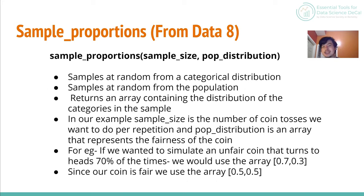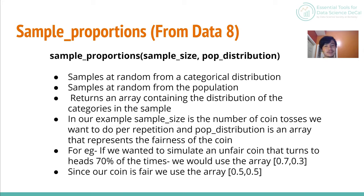One really important method you might have used in Data 8 in Jupyter Notebooks is sample_proportions, which performs many of those testing steps in one place. The first argument is the number of times you want to run the test; the second is the distribution of probabilities. For a fair coin flip, the distribution would be [0.5, 0.5]. For an unfair coin, you could do [0.7, 0.3] giving a skewed probability distribution. It does all the for-loop steps that would take several lines of code, but in one line.